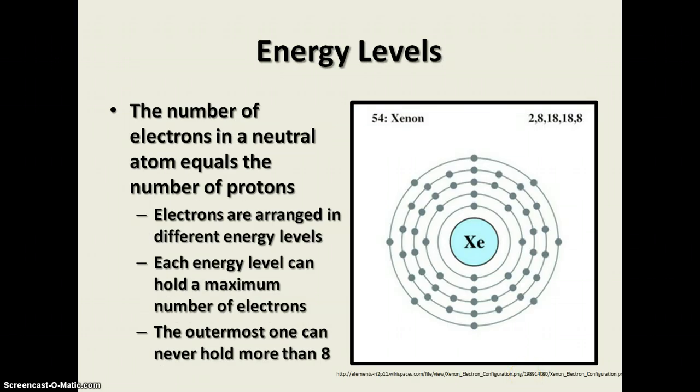The number of electrons in a neutral atom equals the number of protons. Notice I said neutral atom because sometimes atoms gain or lose electrons, which we're going to talk about in another lesson. The electrons are arranged in these energy levels. Each energy level can hold a maximum number of electrons. This particular element, xenon, has five energy levels.